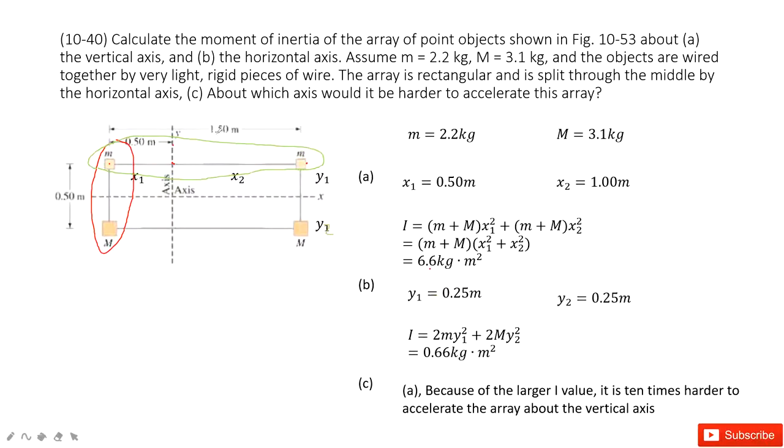So we can see that this united one is just 2m times y1 squared and then 2 capital M times y2 squared. We get the final answer there.